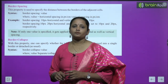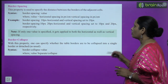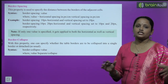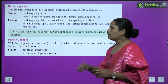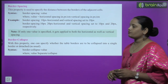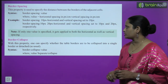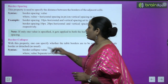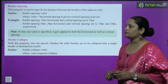Next comes border-spacing. This property is used to specify the distance between the borders of adjacent cells. The syntax is: border-spacing: value, where value is horizontal spacing in px or centimeter, and vertical spacing in px or em. For example: border-spacing: 10px 10px (both horizontal and vertical 10px); or border-spacing: 10px 20px (horizontal 10px and vertical 20px respectively).